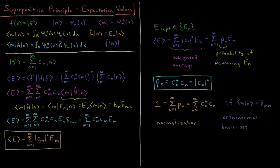Our normalization constant for the entire function, if we want it to be normalized, is 1 over the square root of the sum of c_n star c_n. This is true when the overlap integral of all basis functions equals the Kronecker delta: 1 if n equals m (they are normalized) and 0 if they are not equal (they are orthogonal). When both conditions hold, we have what is called an orthonormal basis set.